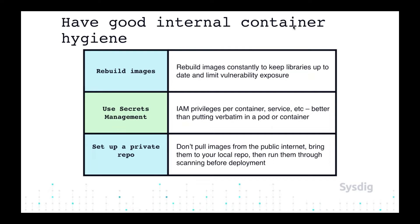Use secrets management and don't bake secrets into the Dockerfile — have some way to introduce container secrets to a container, or build some type of IAM privileges to secure communications between different containers. Also set up a private registry: if you're pulling images from Docker Hub or using any third-party images, put those in your own registry first so you can validate them rather than pulling them directly into your production environment.